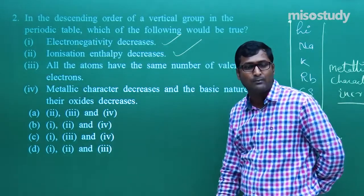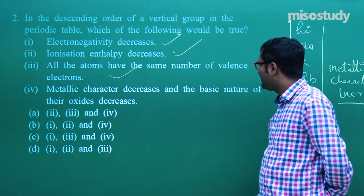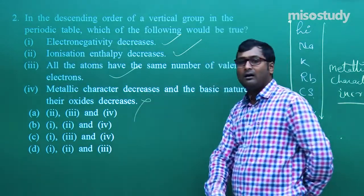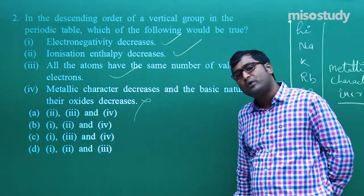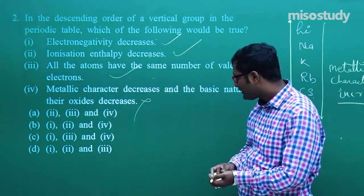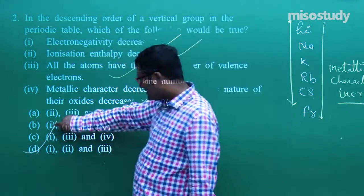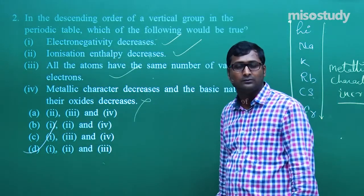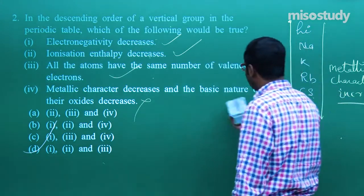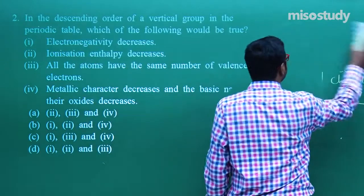Next: metallic character decreases — this is NOT correct, because metallic character increases going down a group. So options 1, 2, and 3 are correct, which means for question number two, D is the correct option. This is a completely conceptual question — if you have command over the theory, you can easily solve it.